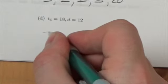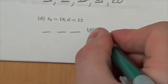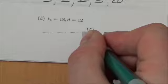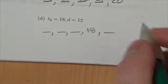We are given the fourth term, so 1, 2, 3, and the fourth term is 18. Our goal here is to figure out everything that's left over.